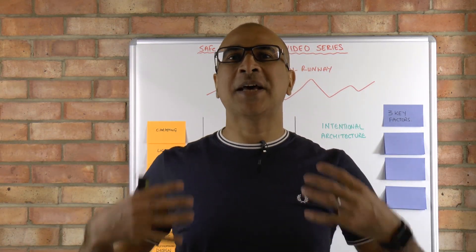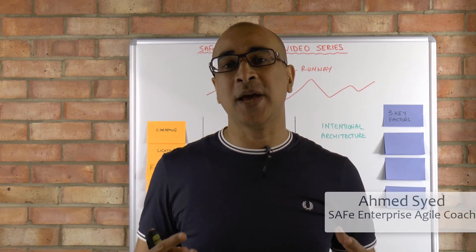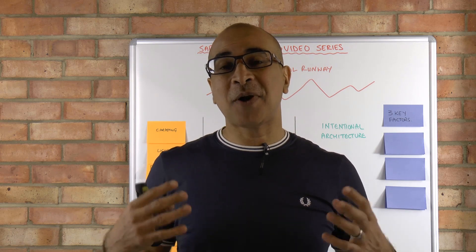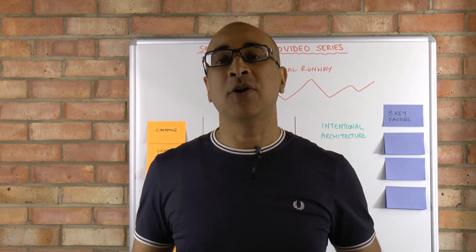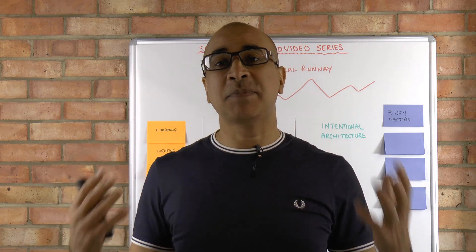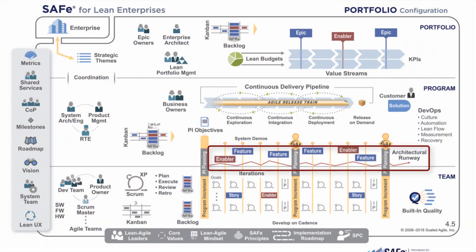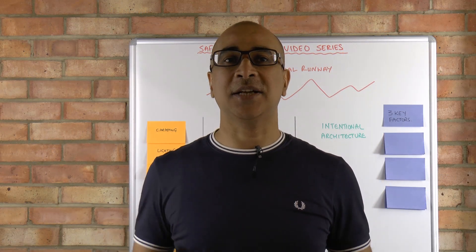Hi and welcome to Safe in the Real World. I'm Ahmed Saeed and today we're going to be talking about the architectural runway in a scaled agile program. The architectural runway looks like a squiggly line that sits at the program tier in the SAFe big picture. Architecture spans across the entire organization's teams, program tier, and portfolio, but what we're looking to answer today is what actually makes up the architectural runway in a scaled agile program.